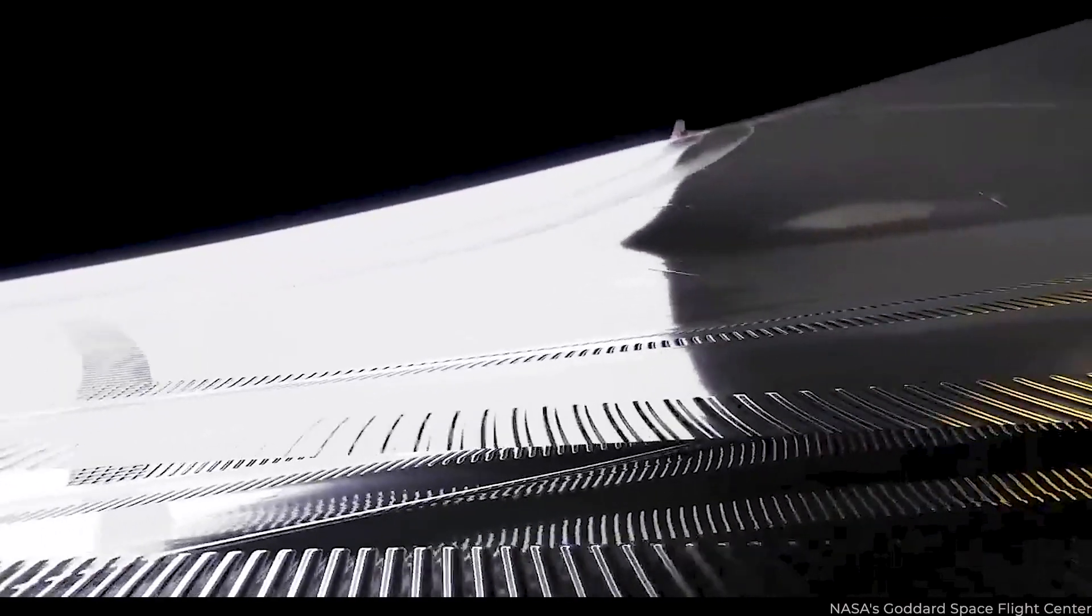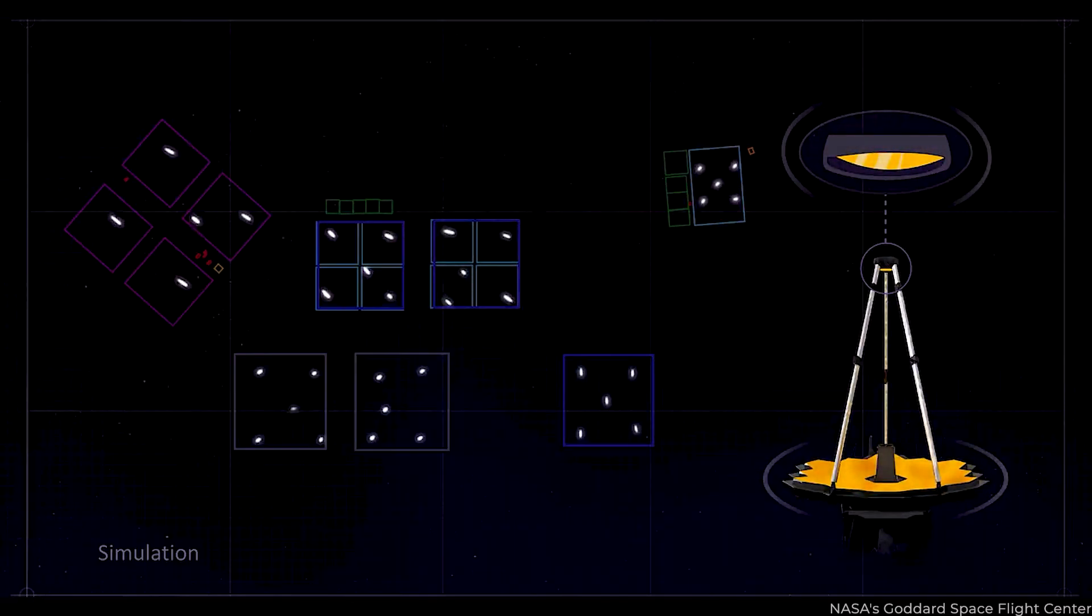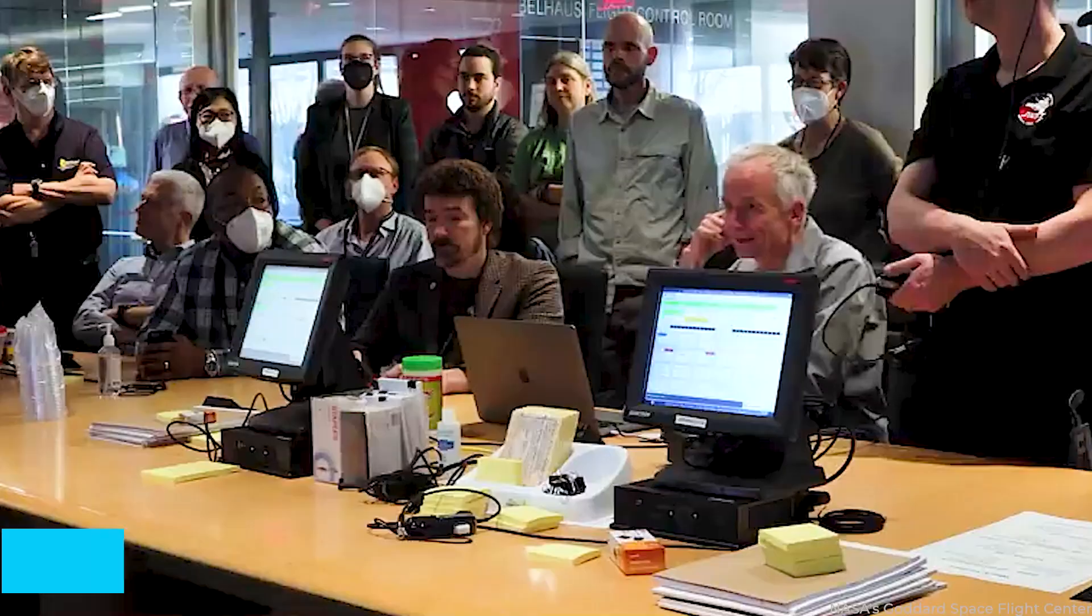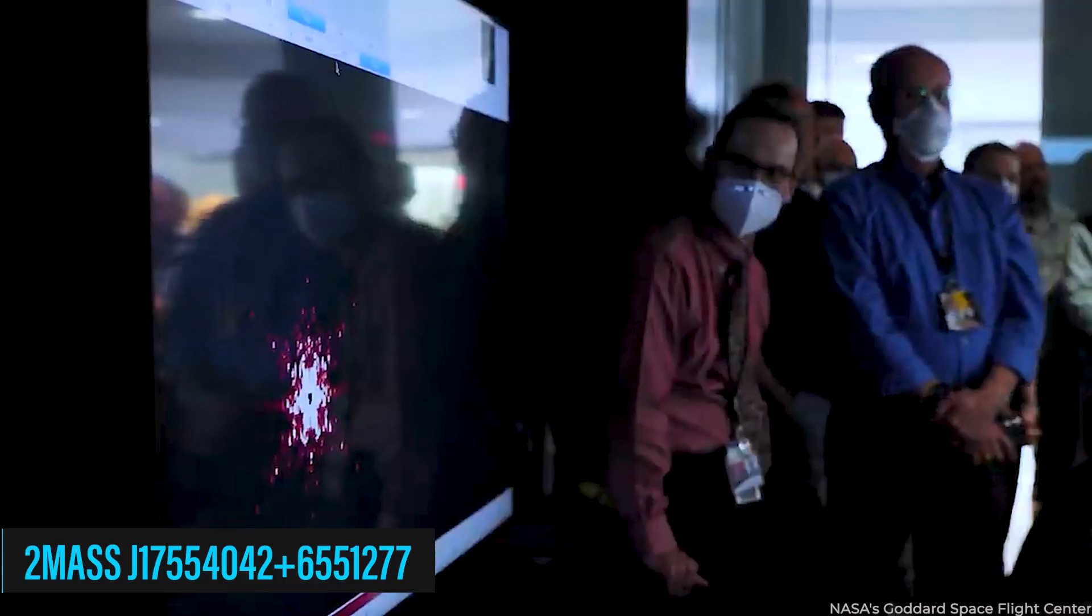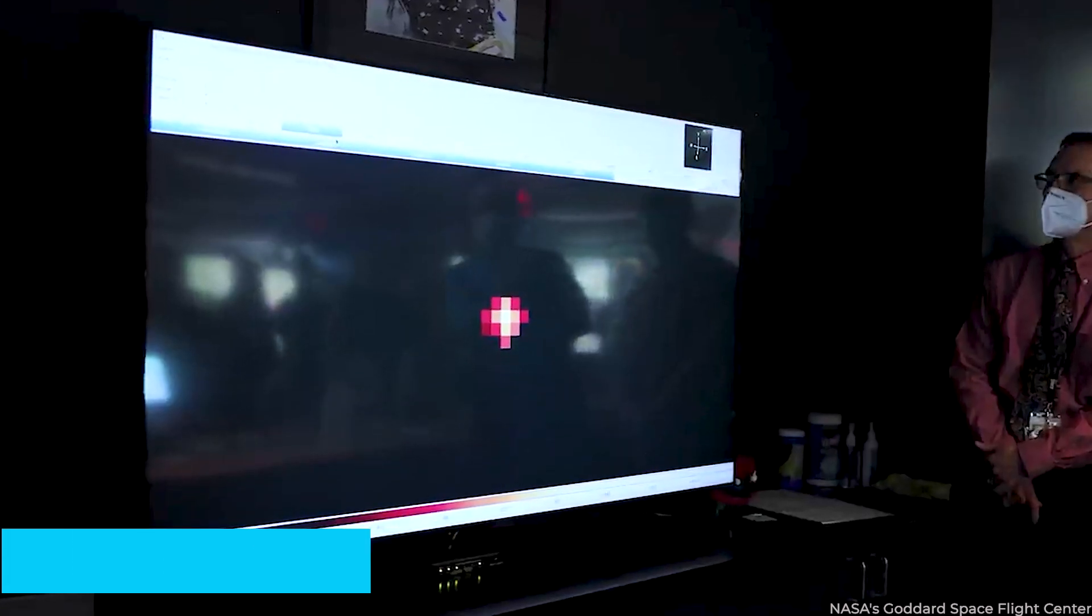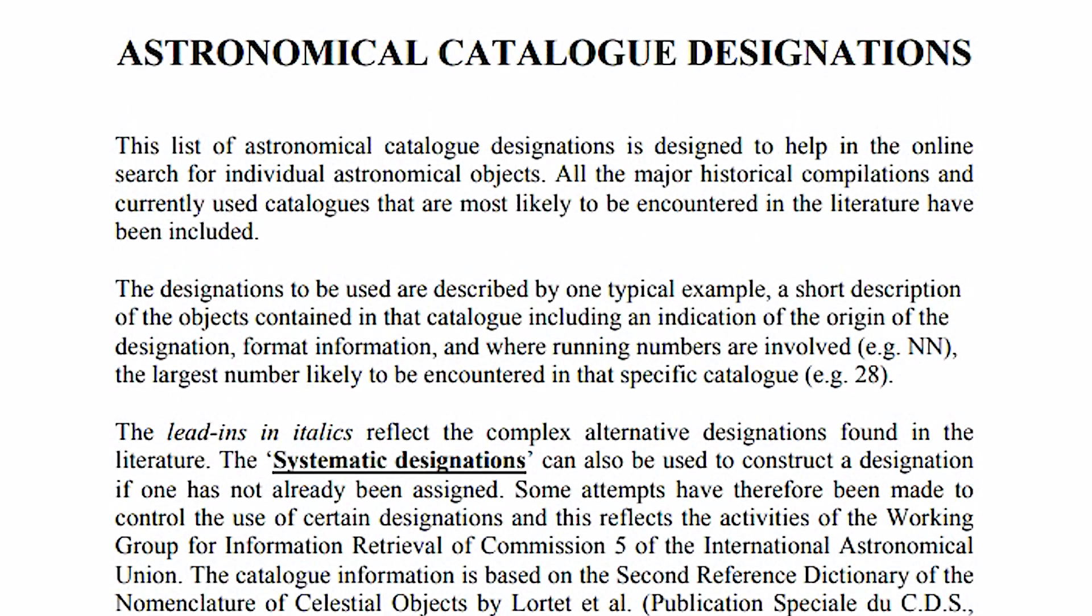Let's gather the latest information about the star that is the focal point of the image generated by the Webb. The articulately named star has earned the name of 2MASS J17554042-6551277. Rather lengthy, but it's based upon a coordinate-based catalogue designation, as per NASA.